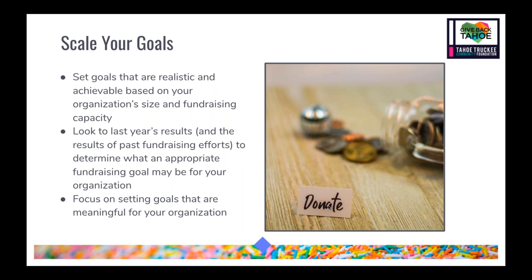To figure out the correct goal, look at your stats and review your analytics. Go to your Give Back Tahoe campaign from last year, see your results — total donations received, total unique donors, your retention rate. Focus on setting goals that are actually meaningful for your organization and not just for the sake of creating a goal, and think about what will be really helpful for your organization in 2021.